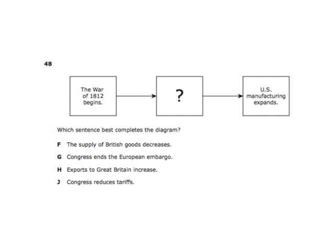The War of 1812 begins — blank — U.S. manufacturing expands. Which statement best completes this diagram? The supply of British goods decreases. The war begins, we're fighting the British so they stop sending us as much stuff, British goods decrease, and then we increase our manufacturing.